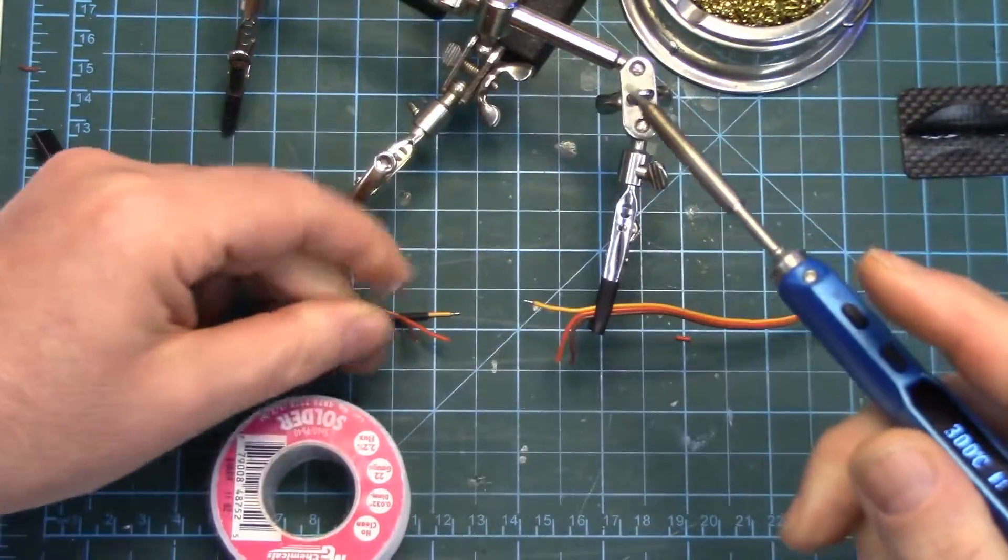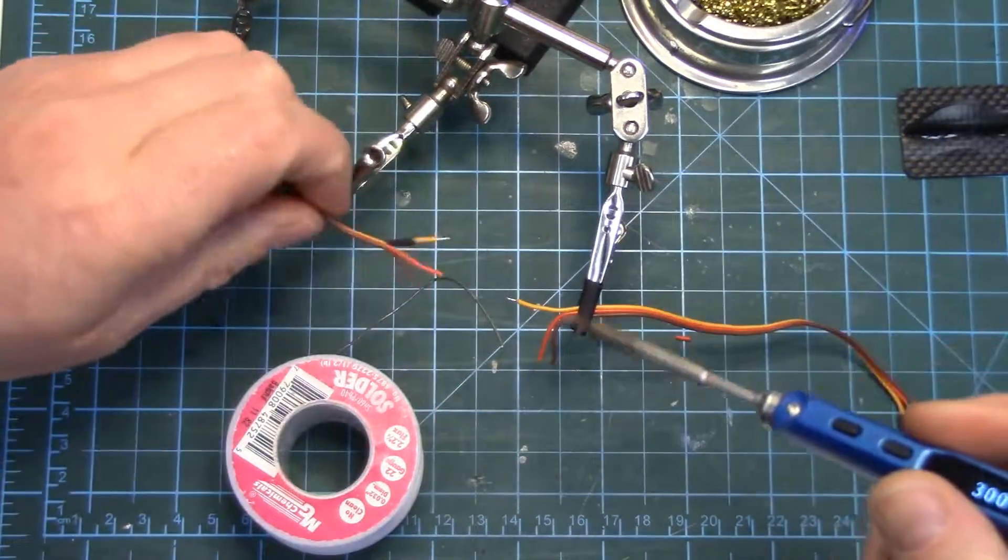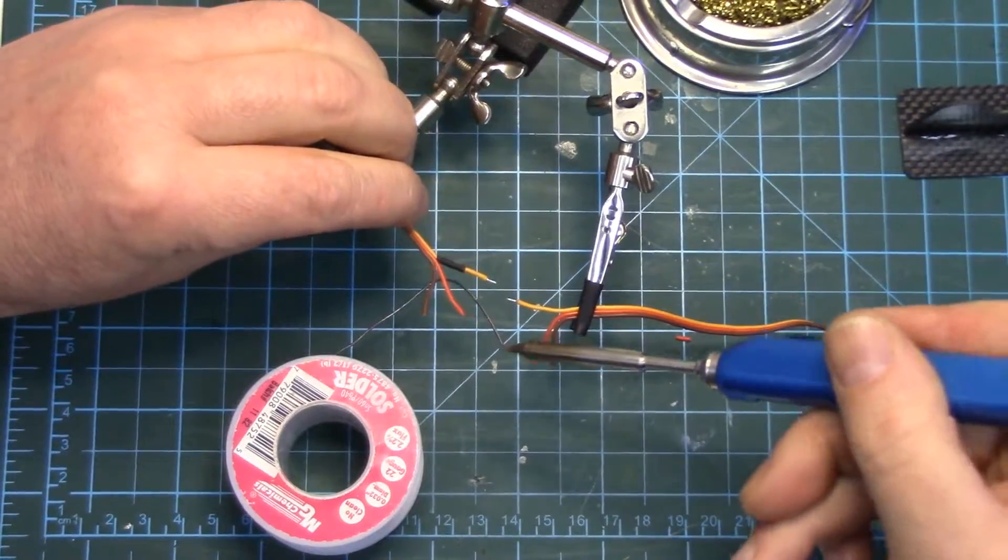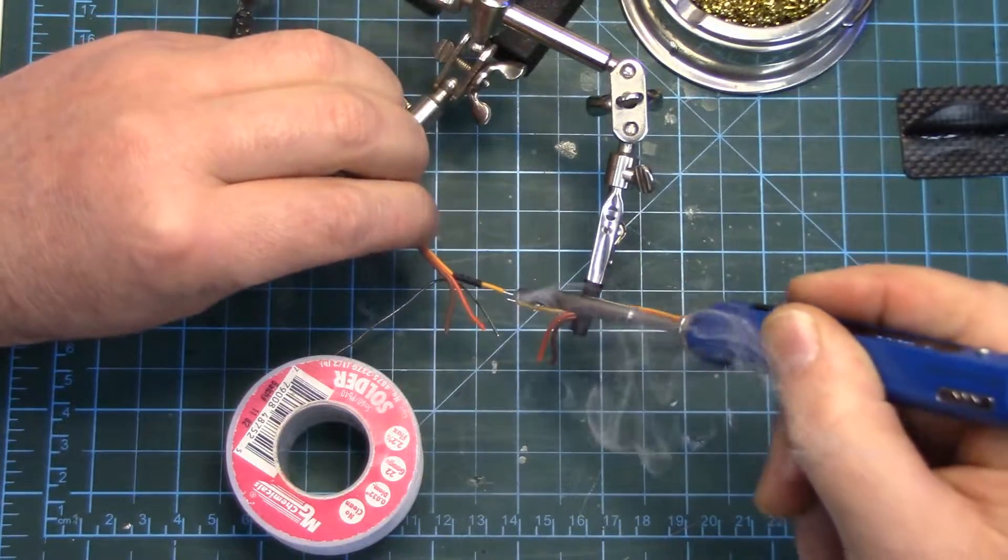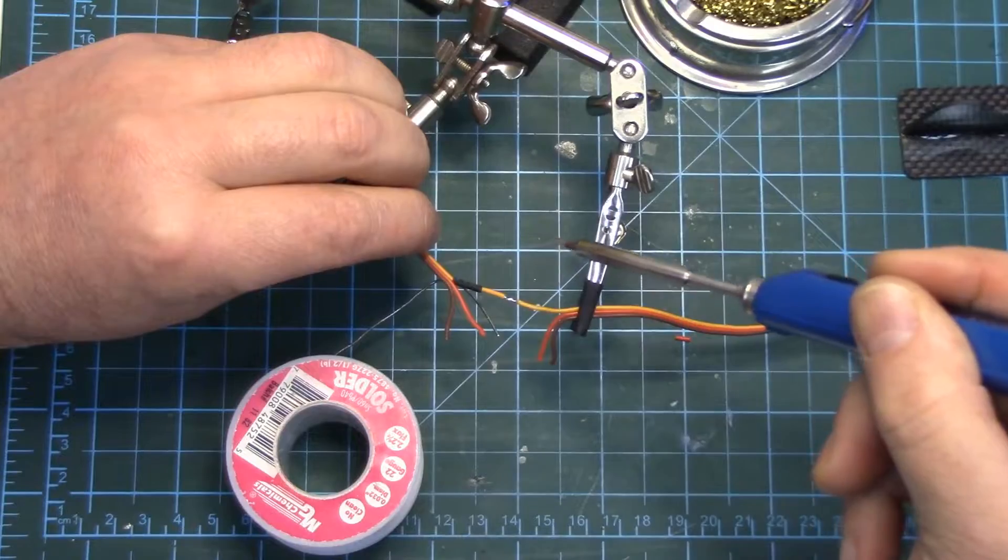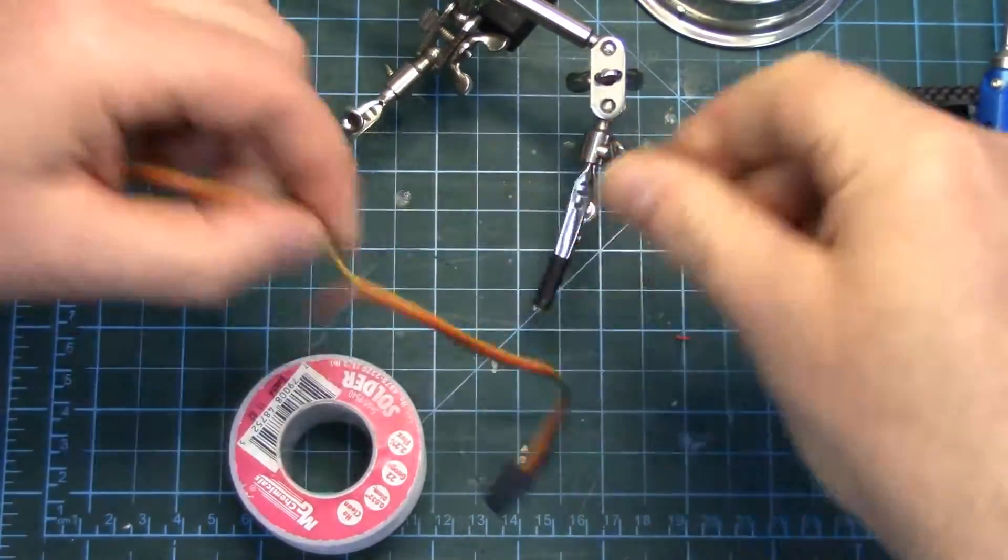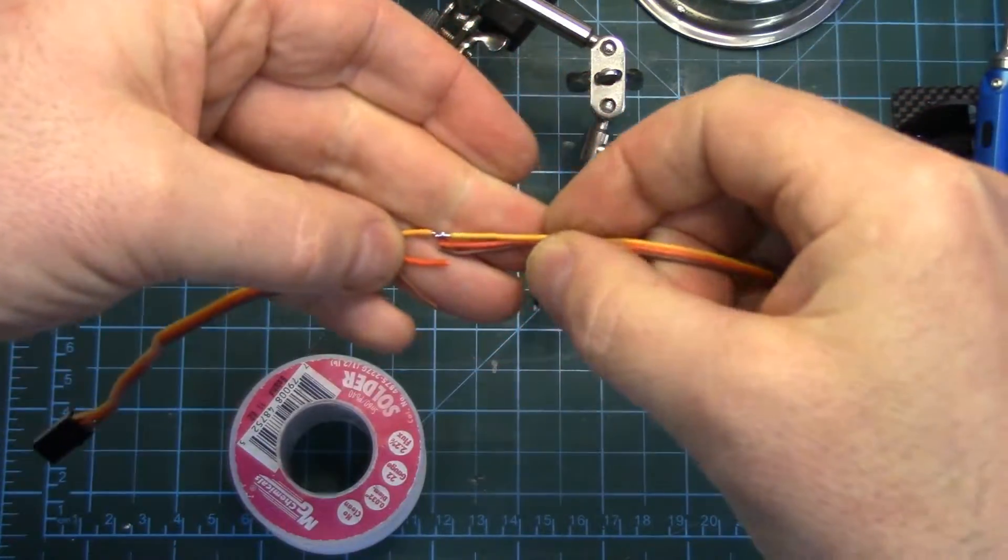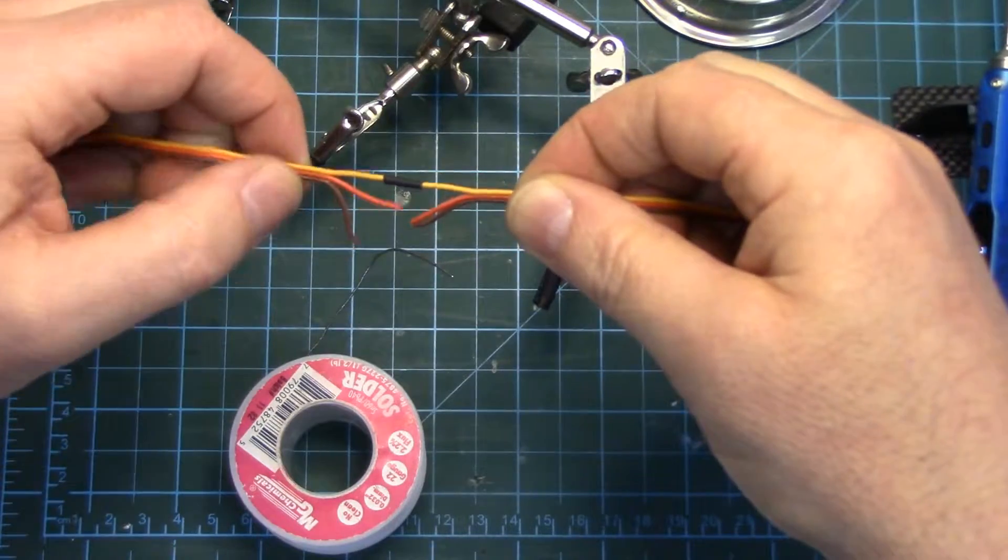We'll just get solder out here. Just get a little bit on the tip. Make sure the tip is clean first. You just got to touch it. And then just make sure it's nice and smooth and then you just put your heat shrink over and shrink it.